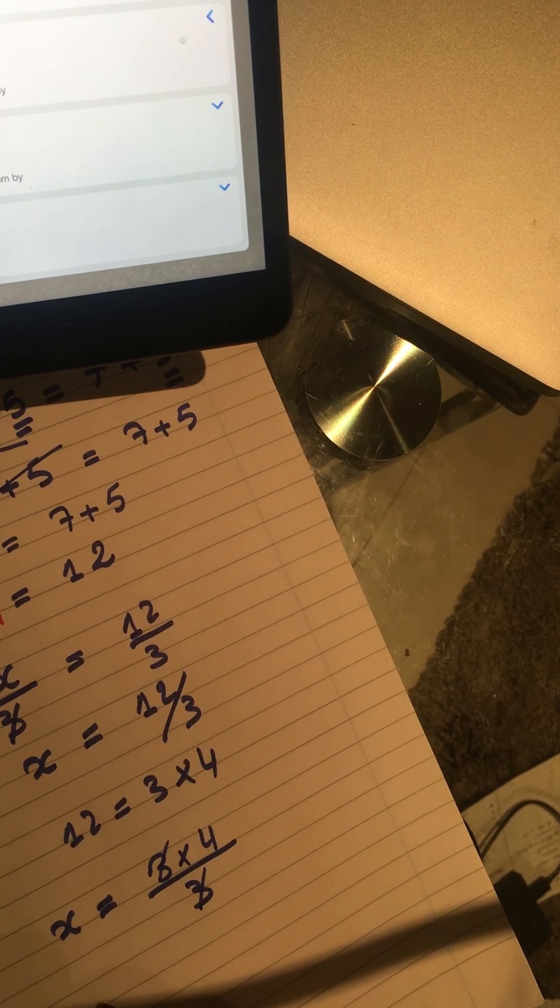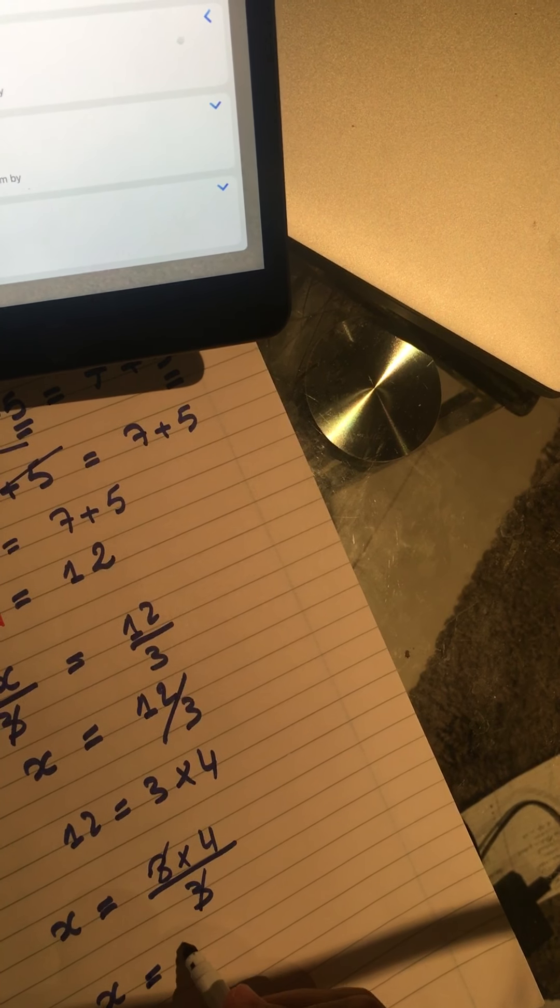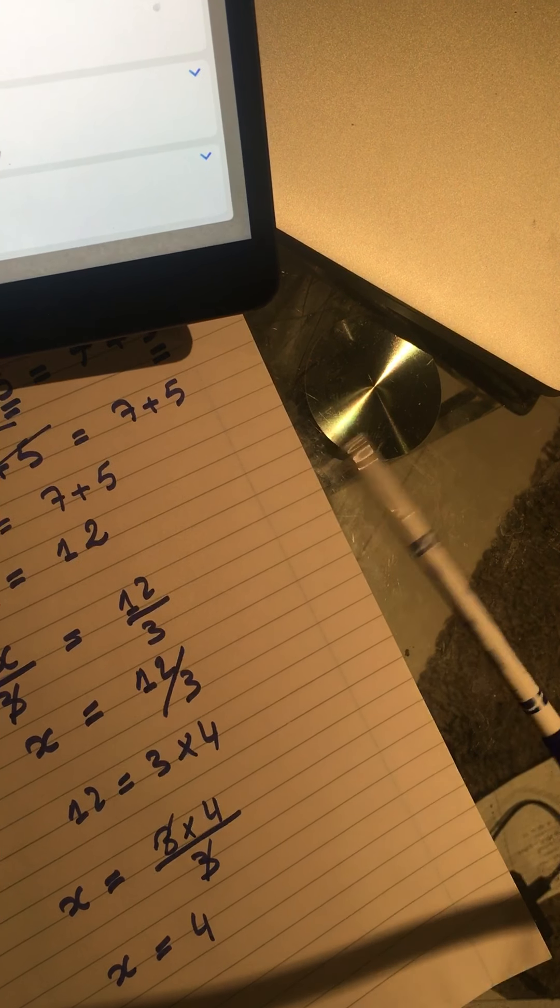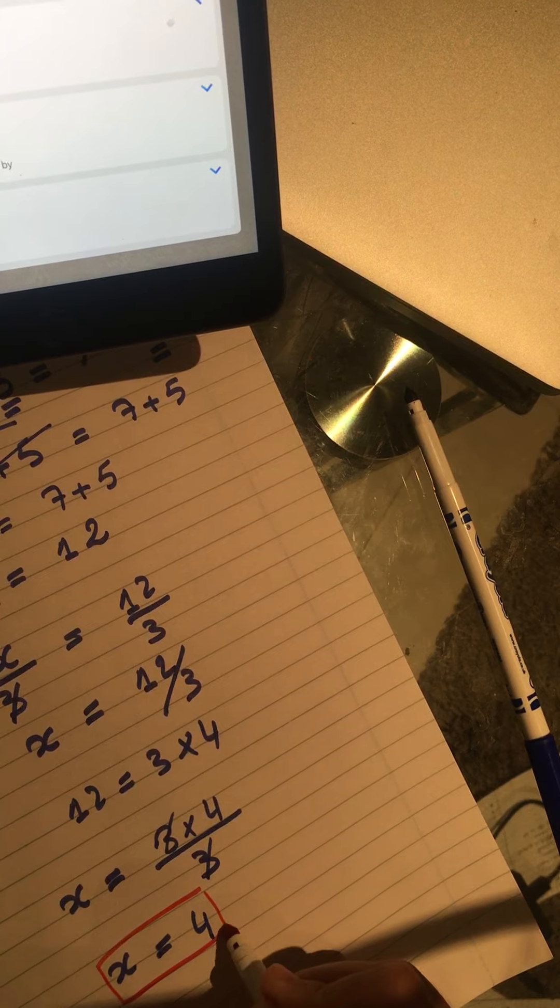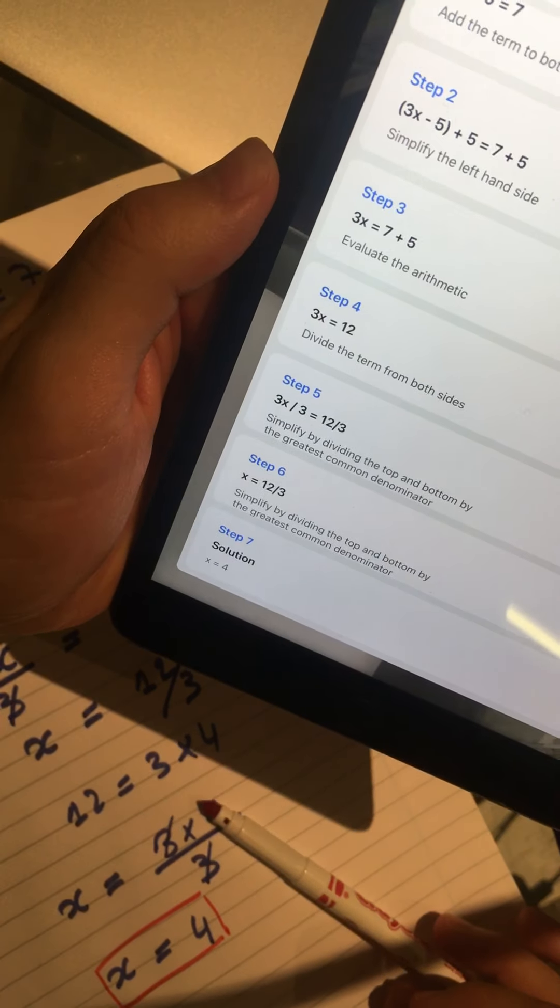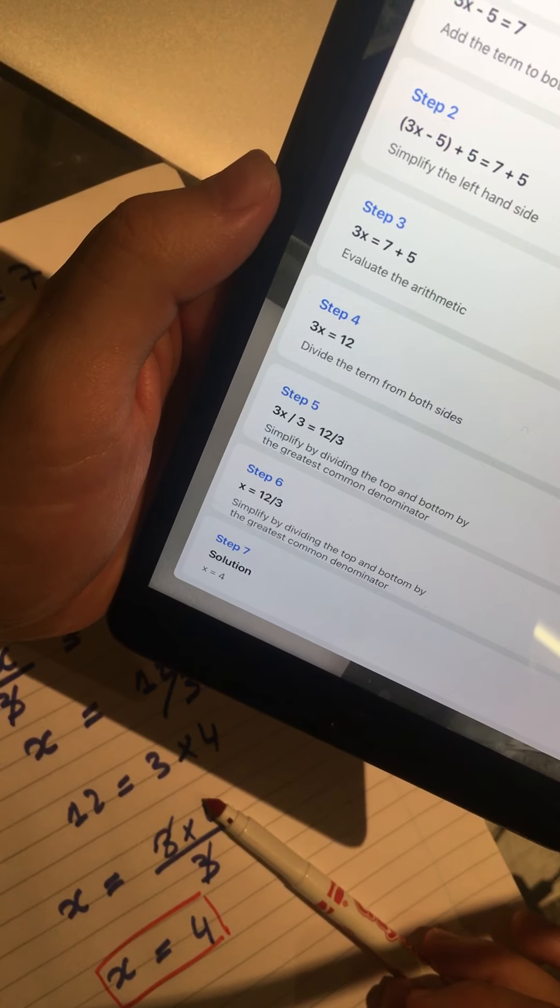So x is going to be equal to 4, and that's the final solution. That's exactly what the app is showing me by following blindly the steps.